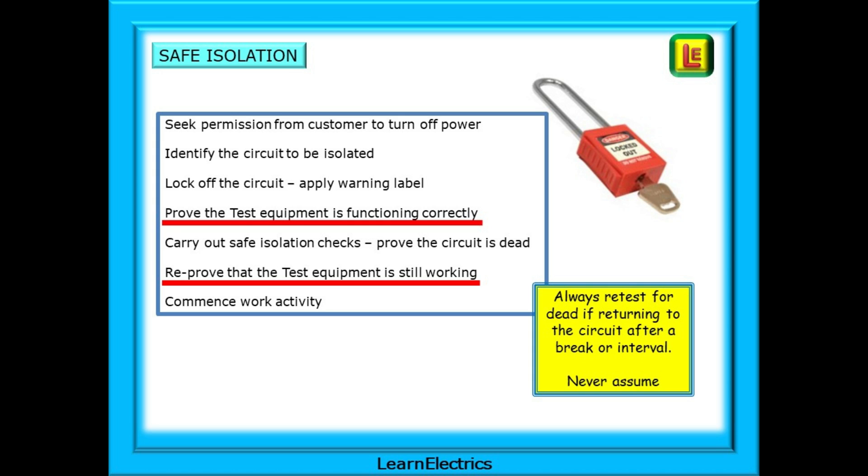Identify the circuit to be isolated, and then lock off the circuit and apply a warning label. Prove the test equipment is functioning correctly, and then carry out safe isolation voltage checks to prove that the circuit is dead. Reprove that the test equipment is still working, and then commence the work activity. It cannot be stressed enough that you should always retest for dead if returning to the circuit after a break or interval. Never assume that all is still dead. You don't know if someone has turned the power back on or bypassed your lock, and it does happen.